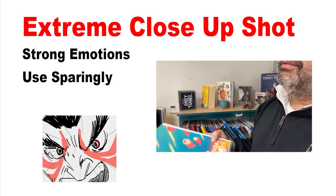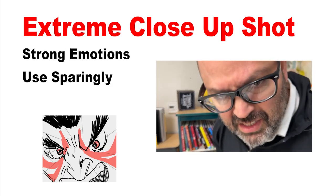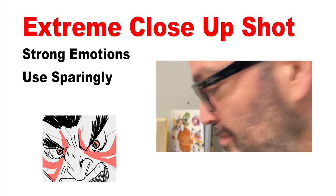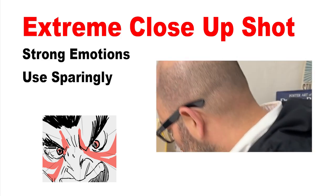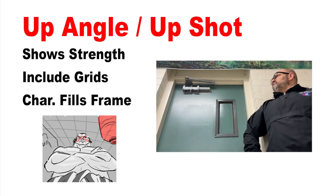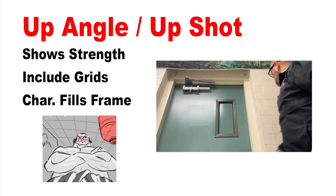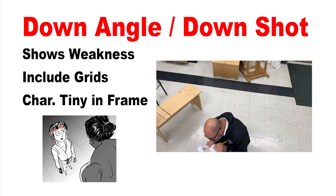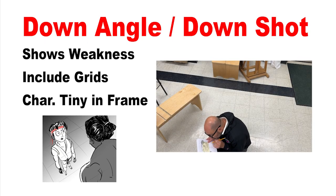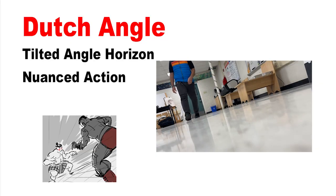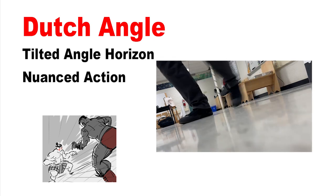When used sparingly, extreme close-ups are great to show strong emotions, but take it easy and don't overdo it. When you tilt the camera up or down, the angles do a great job of communicating strength, and when you point the camera down, you can show weakness and vulnerability. When you tilt the frame a little bit off to the side, this is called Dutch angle, and it shows some strong action.